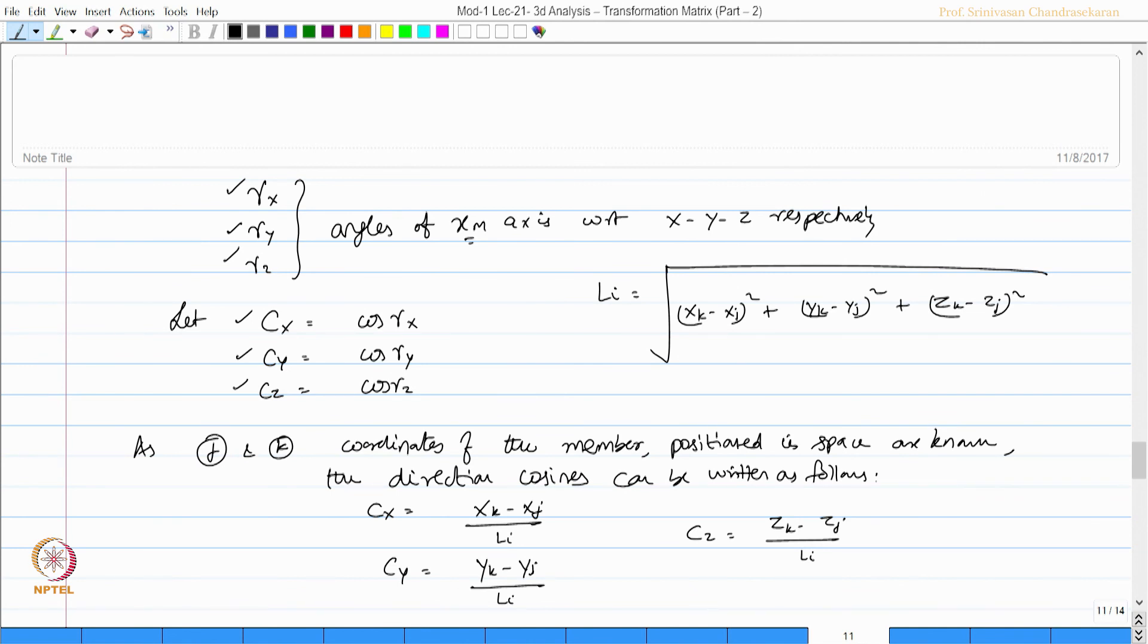Interestingly, xk, yk, and zk, similarly xj, yj, and zj are actually coordinates of the member or the beam element placed in space.